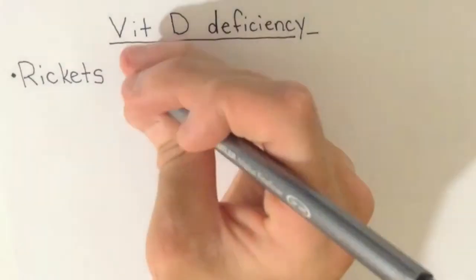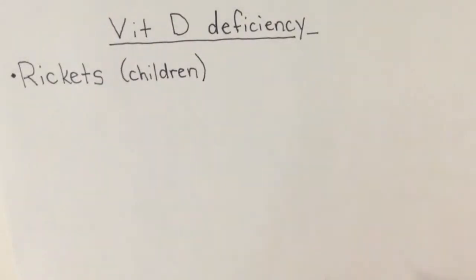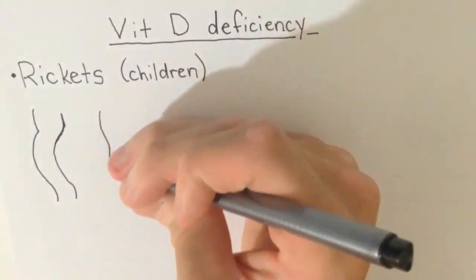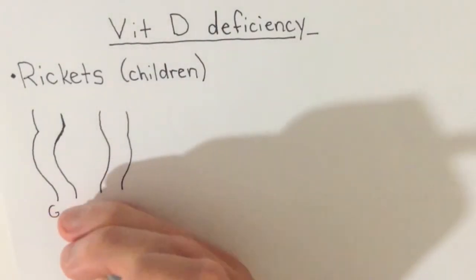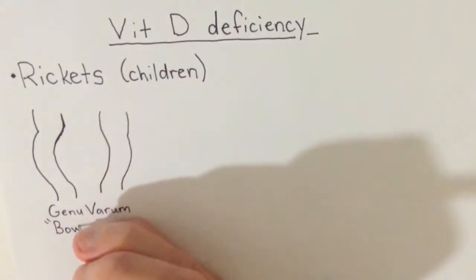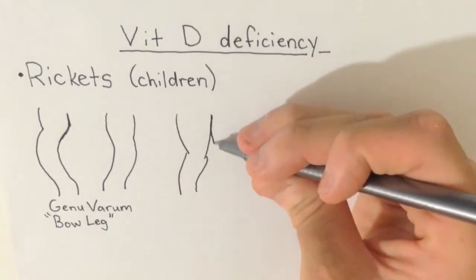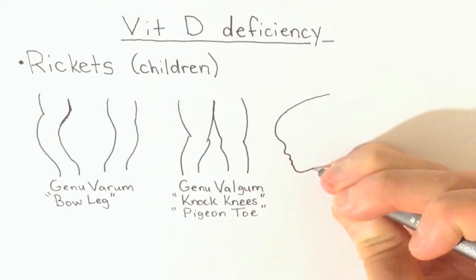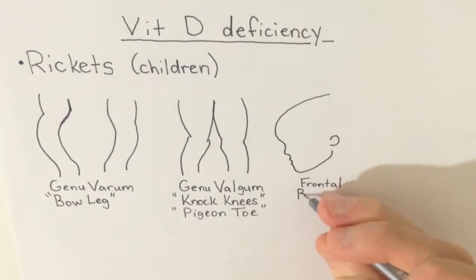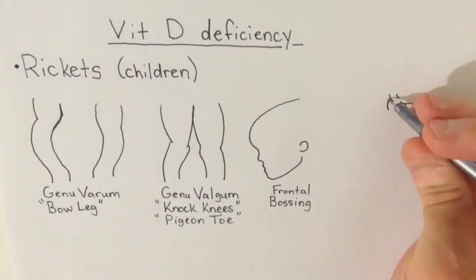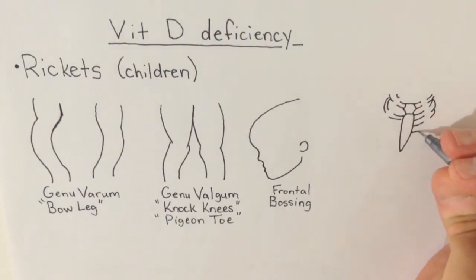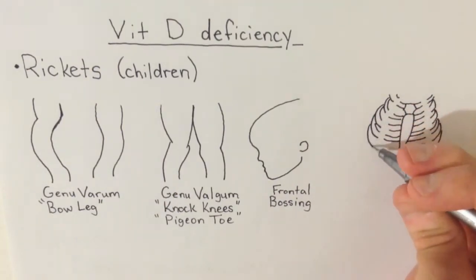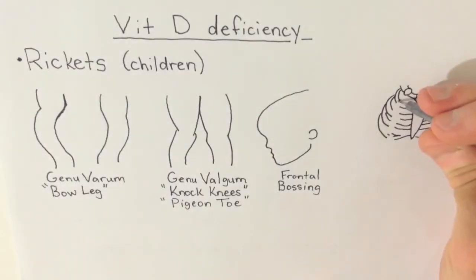If a child is chronically deficient in vitamin D, they can develop something called rickets, which involves multiple deformities such as genu varum or bow legs, or frontal bossing of the forehead, or these knobby beaded-like appearances on the costochondral junctions of the ribcage called rickety rosary, which can be seen on an x-ray or, if severe enough, by the naked eye.